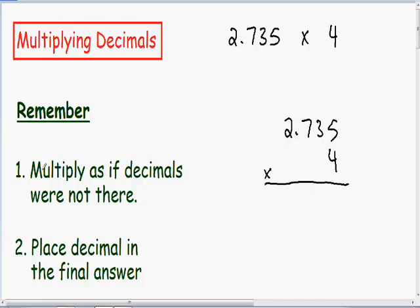So now remember the first thing that we have to do, we need to multiply as if the decimals were not even there. So let's just multiply these numbers together as if that decimal did not exist.